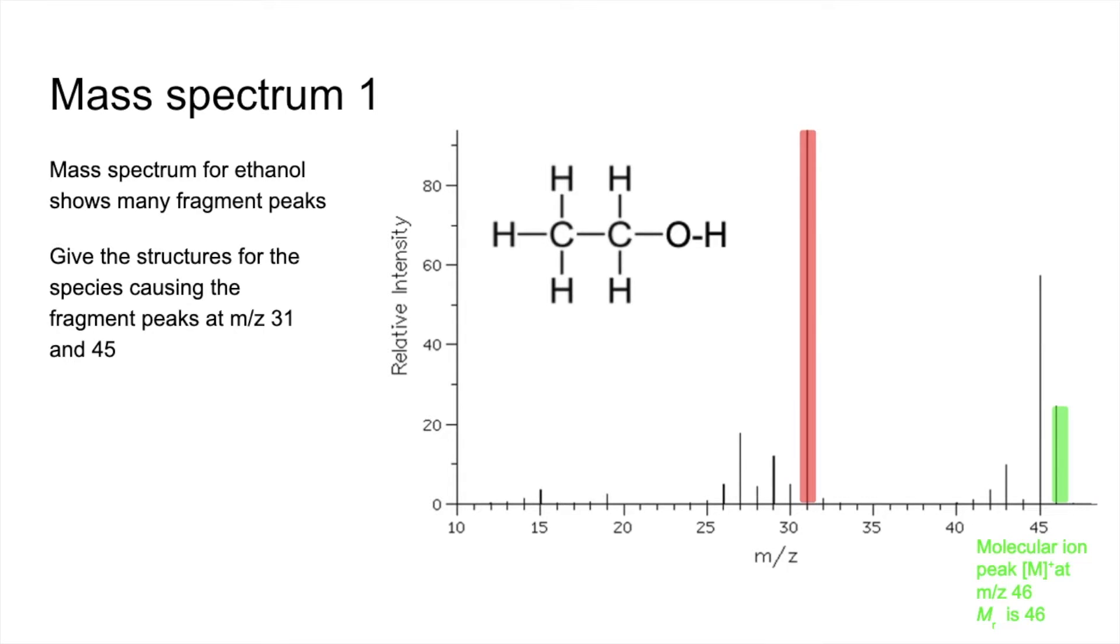We'll start with this one here, the m/z 31. The first thing I would be doing is looking at the difference in m/z values. 31 to 46, that's a difference of 15. That's going to be caused by the breaking off of a CH3 group because that's got a mass of 15, 12 plus 3. Obviously if CH3 is broken off, then what's left carries a positive charge and causes this peak here.